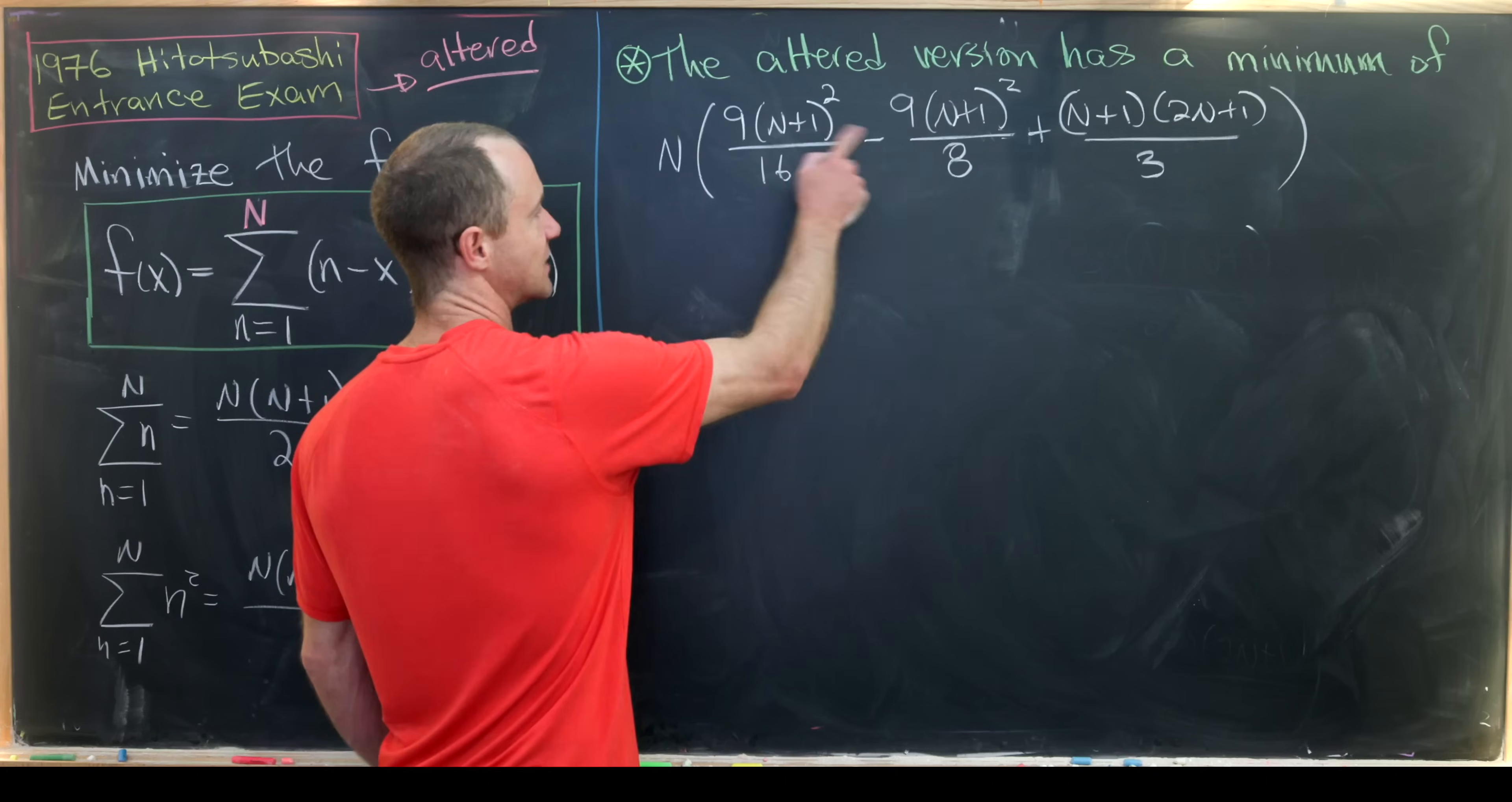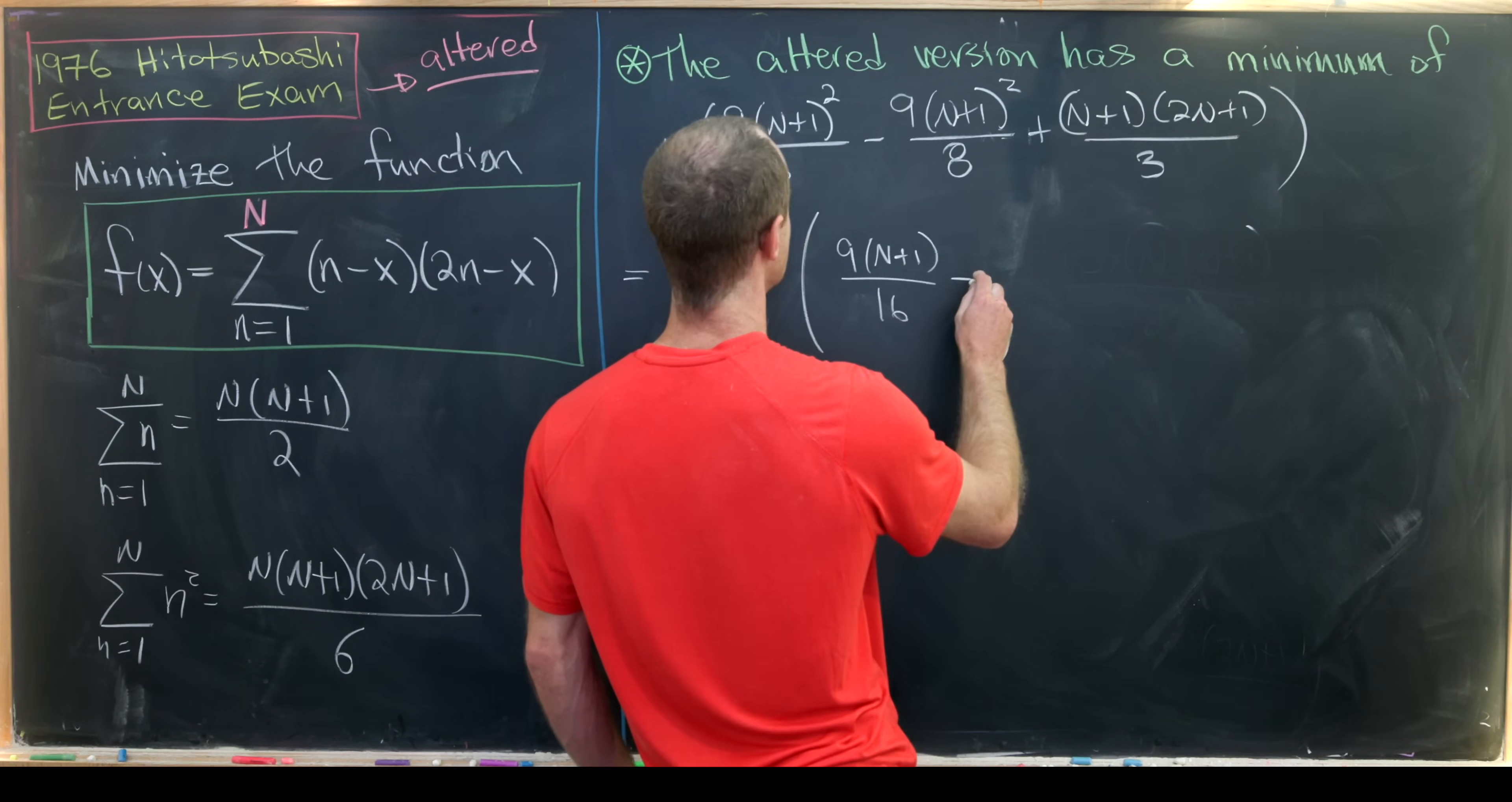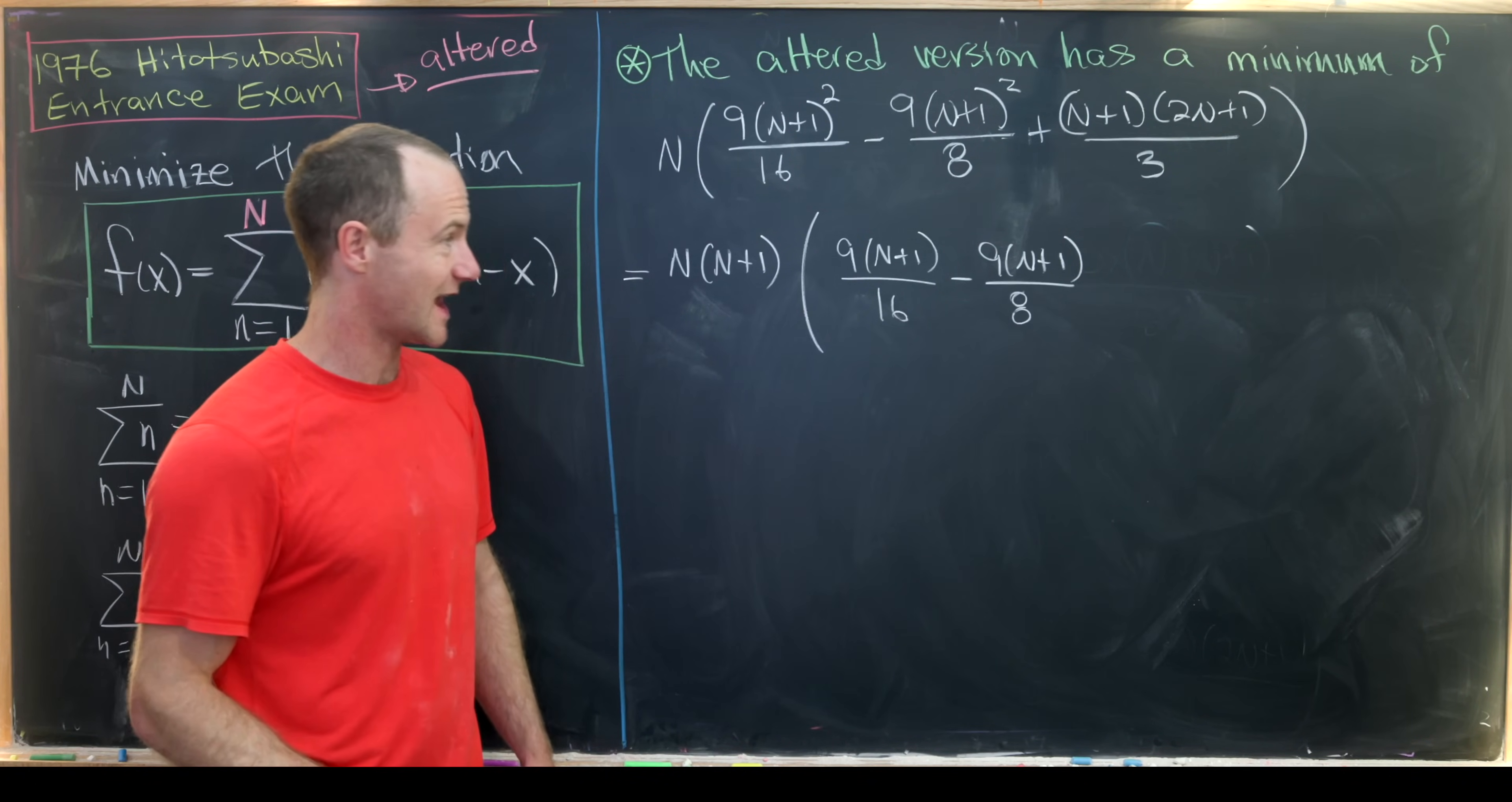Notice that we can factor an (N+1) out of every term here. That'll give us N(N+1) and then here we'll have 9(N+1)/16 minus 9(N+1)/8.